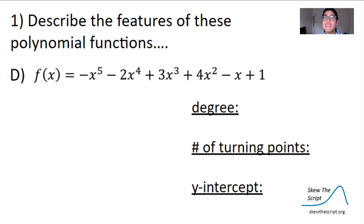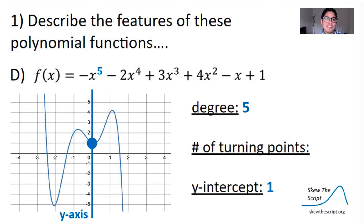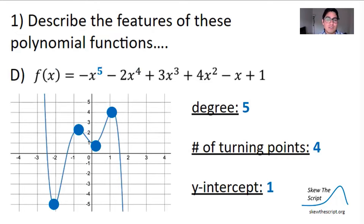And now 1d: we have a polynomial of degree 5, our highest degree yet. We can determine that the y-intercept is positive 1, and it looks like we have four turning points.